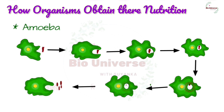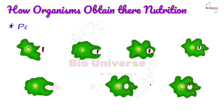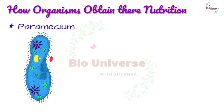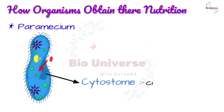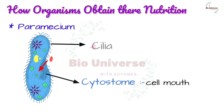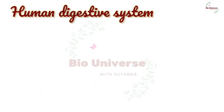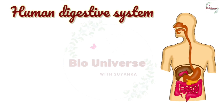The digestive enzymes are from the organelle called the lysosome. The digested food is distributed in the cytoplasm and the undigested food is ejected through the cell membrane. In Paramecium, a unicellular organism with a specific shape, food is ingested through a special opening called the cytostome. Food is brought to this opening by the lashing movement of cilia that cover the entire surface of the cell.